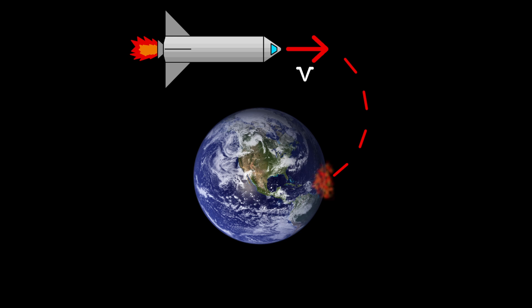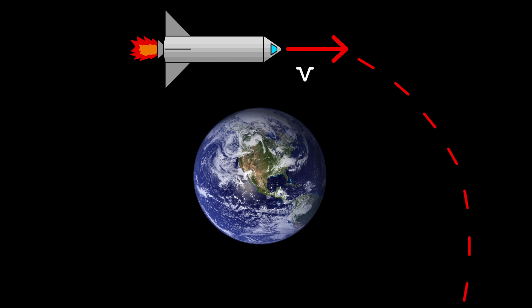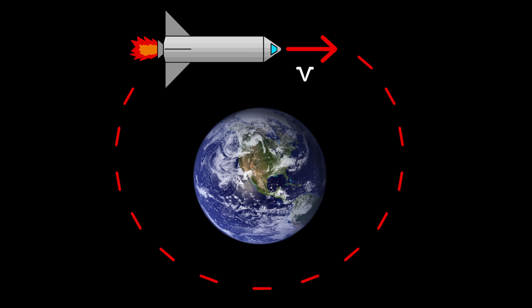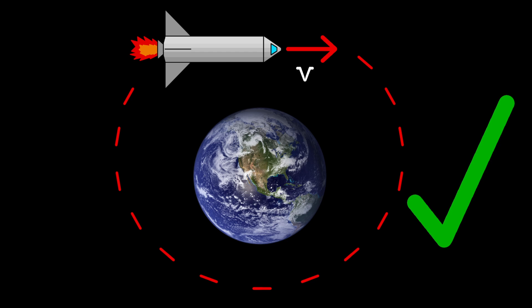Too slow and we fall back to Earth. Too fast and we leave Earth completely. So we want to figure out what speed we need for a stable orbit. For this we will need to grab a calculator and do some meth.